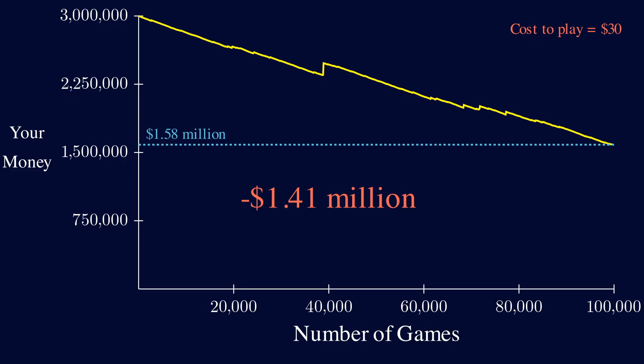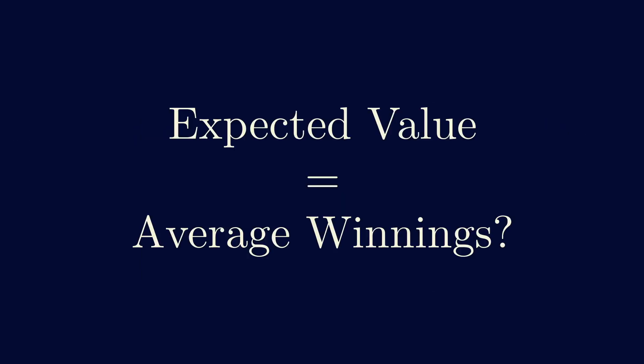If expected value is actually infinite, how can you be down so much money after playing so many times? You start to question what expected value means. Is it really your average winnings? If so, how can this be infinite?